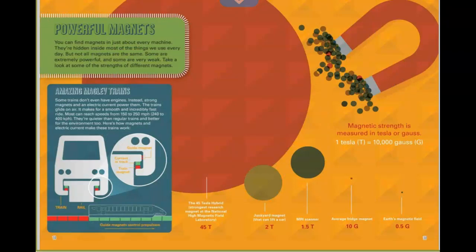Powerful magnets. What kind of magnetic energy is there? Well, you can find magnets in just about every machine. They're hidden inside most of the things we use every day. But not all magnets are the same. Some are extremely powerful and some are very weak. Take a look at some of the strengths of the different magnets. And this is that train I was telling you about. The Maglev trains. This train doesn't even have an engine. Instead, strong magnets and electric current power them. The trains glide on air. It makes for a smooth and incredibly fast ride. Most can reach speeds from 150 to 250 miles per hour. They're quieter than regular trains and better for the environment too.